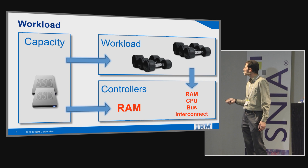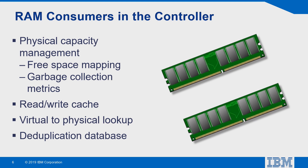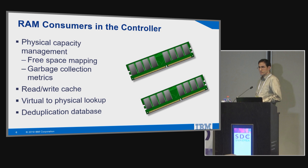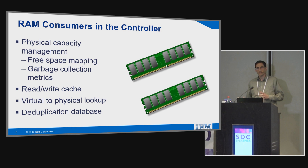Increasing capacity has a direct influence on RAM utilization. There are several primary consumers of RAM within the controller. The first is physical capacity management — we need to manage our storage, and today a storage controller isn't just running thick provisioning. We have data reduction, thin provisioning, and data written elsewhere. The layer of physical capacity management requires lots of memory, and it scales as capacity scales.